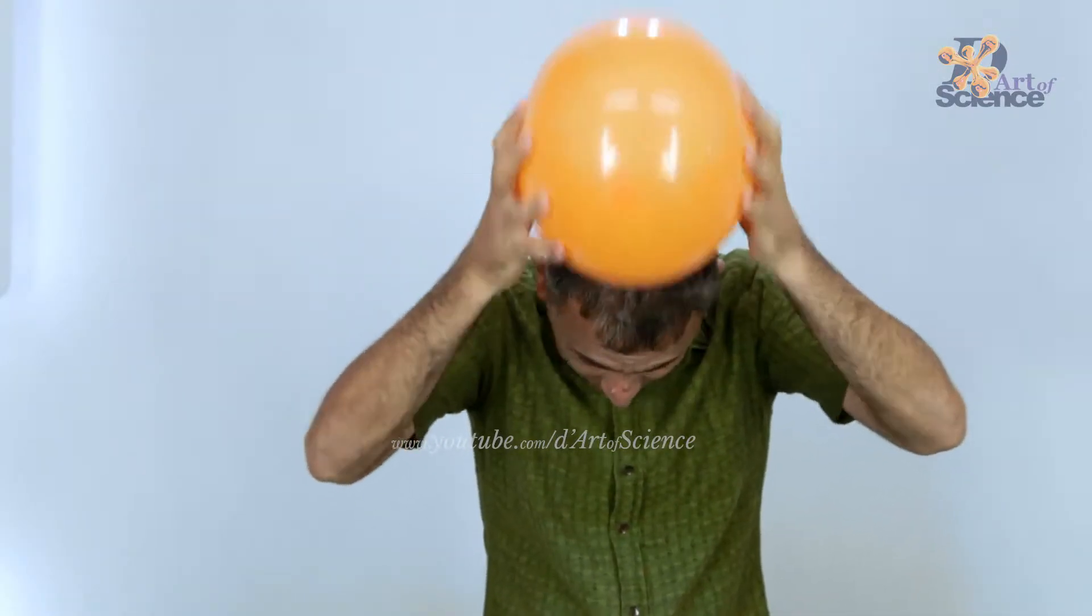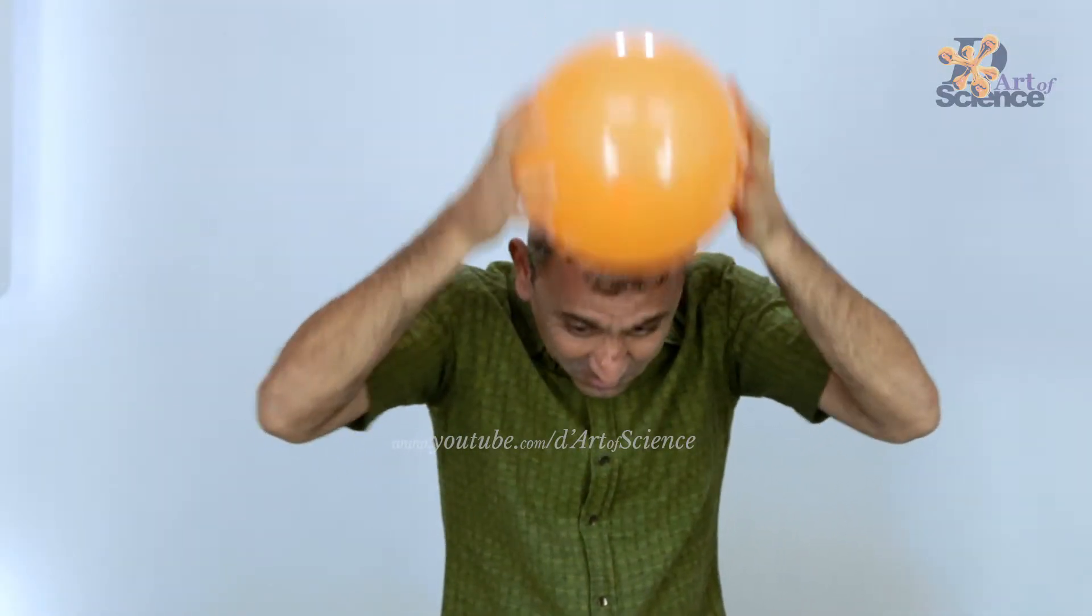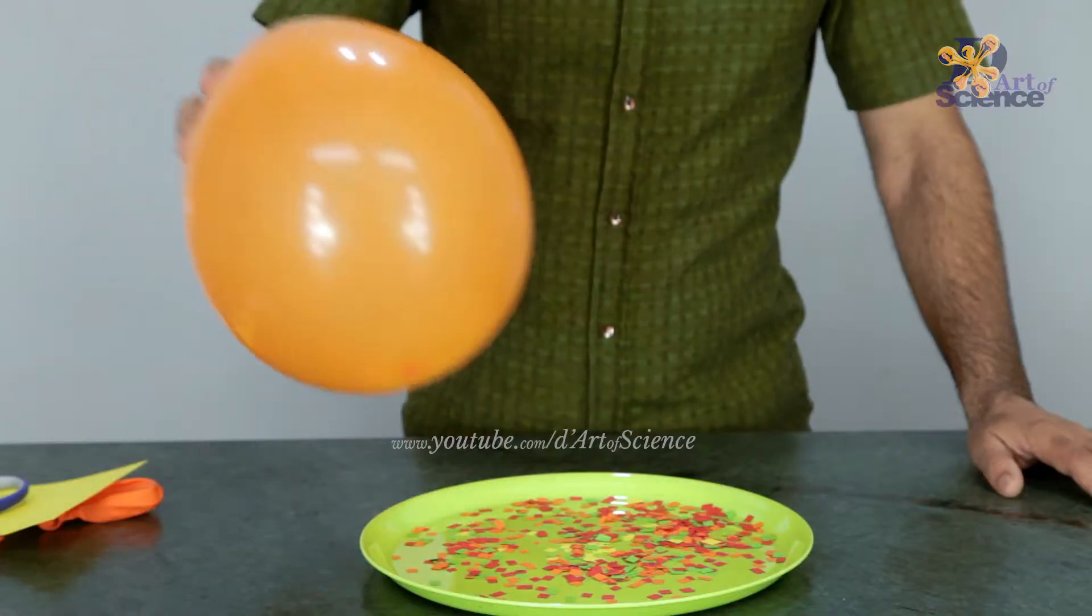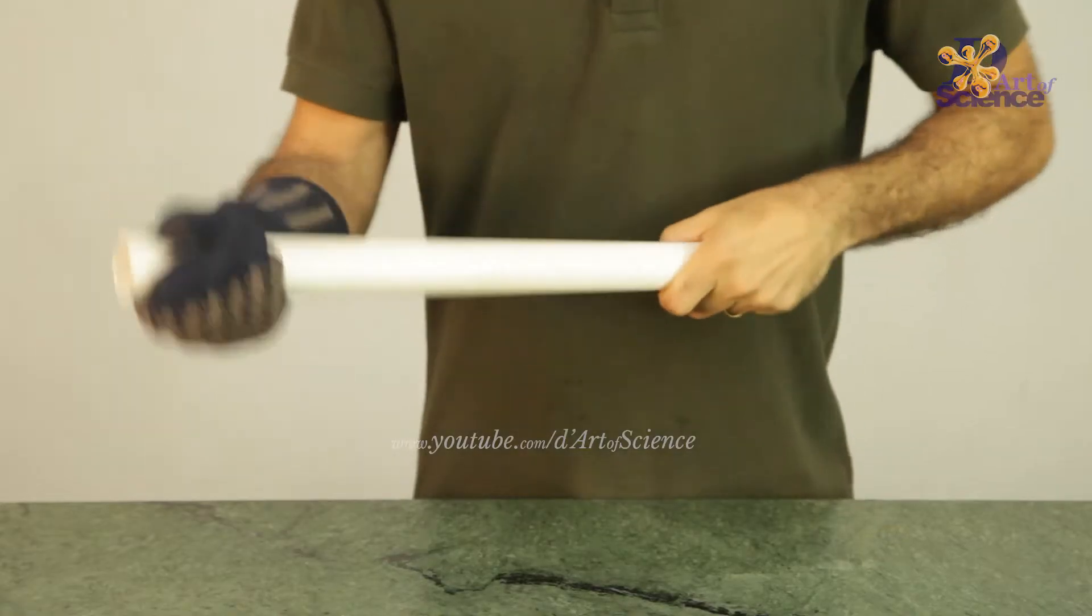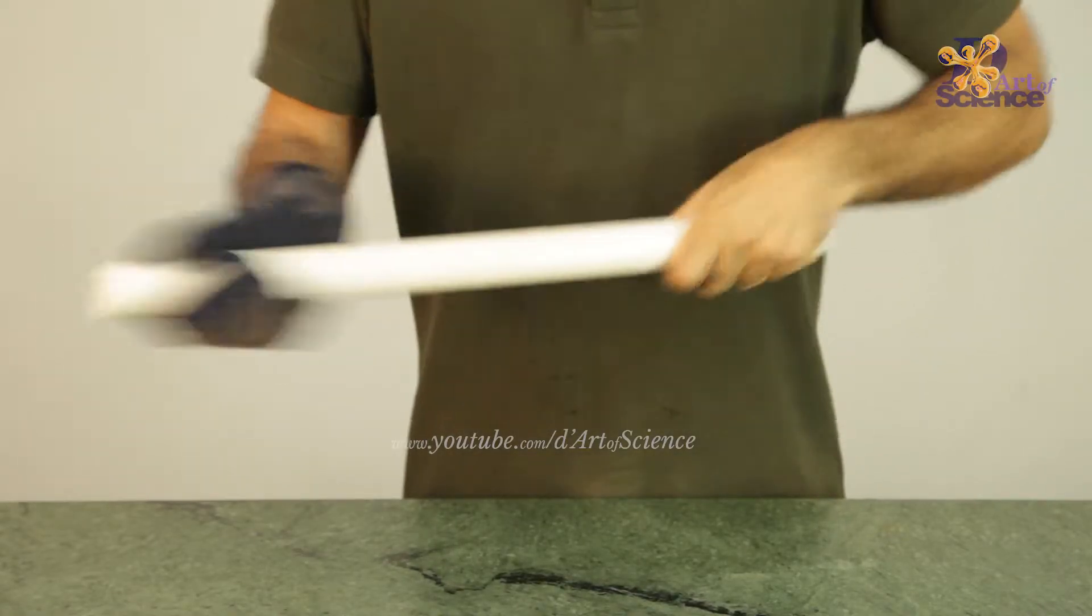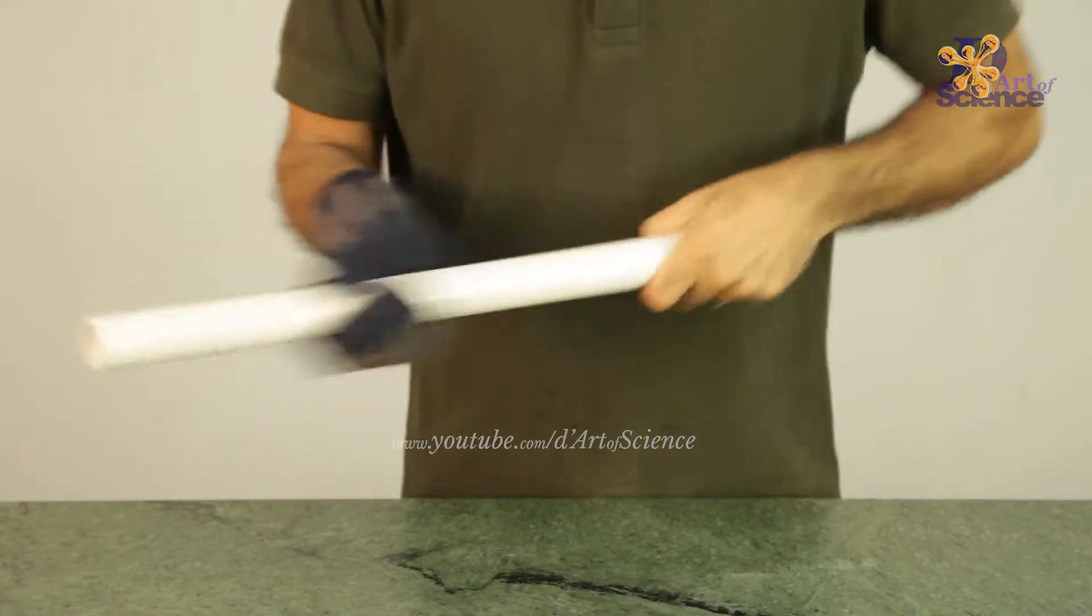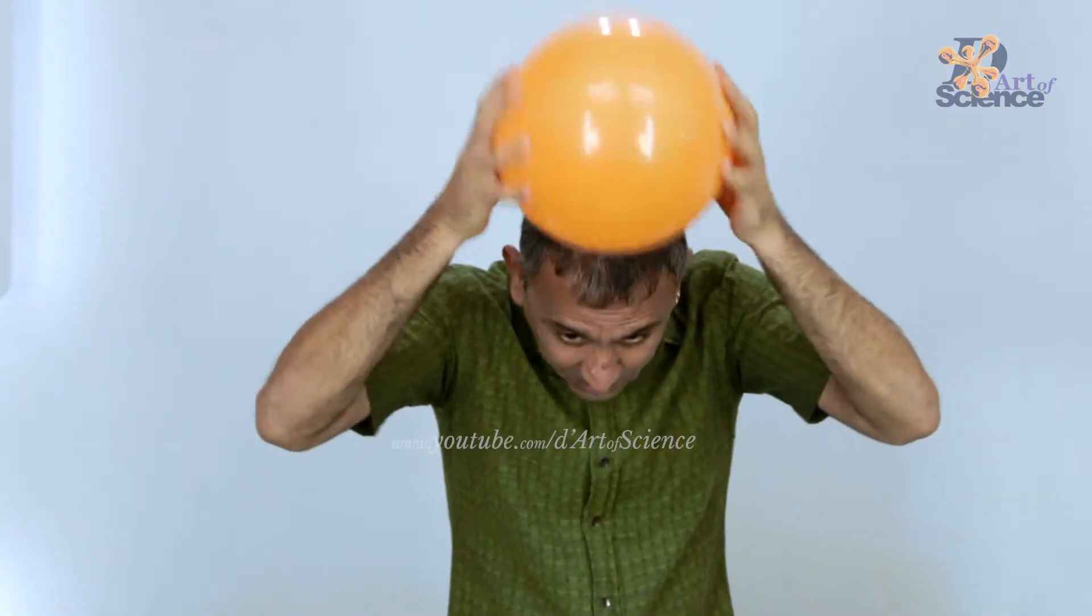So by rubbing, an object gets electrically charged through what is called charging by friction. And it develops static electricity or a static charge that remains bound to the object. This can only be done if the material of the object we are holding is an insulator or non-conductor like plastic or rubber.